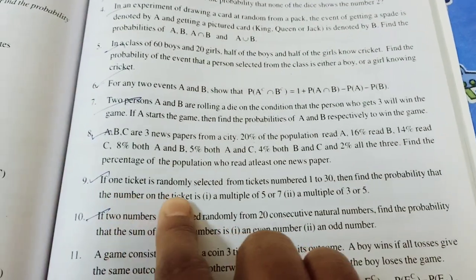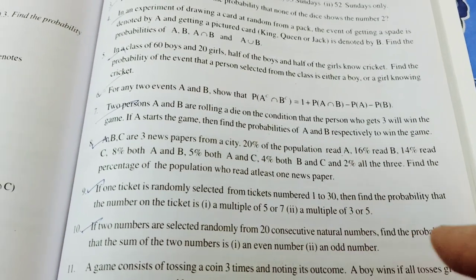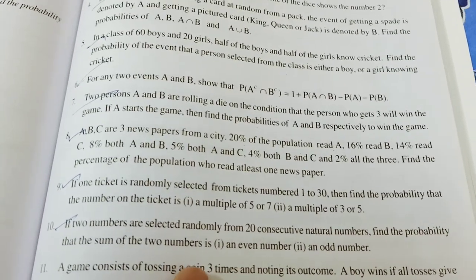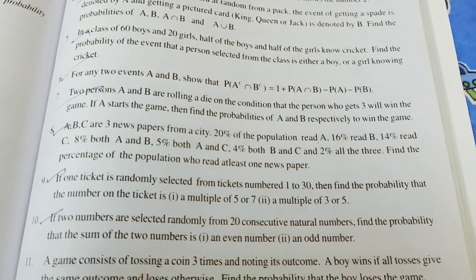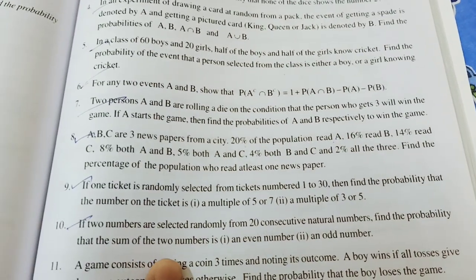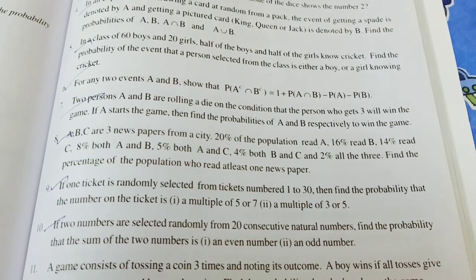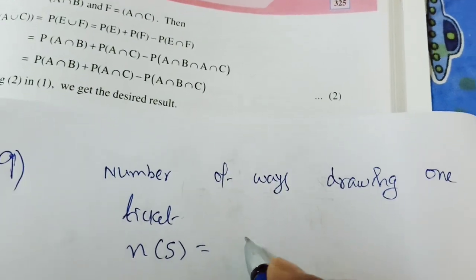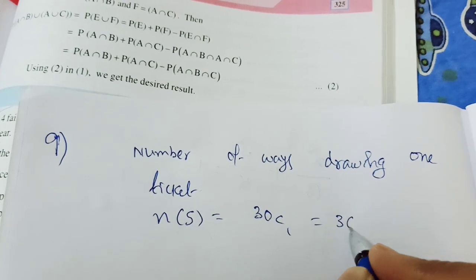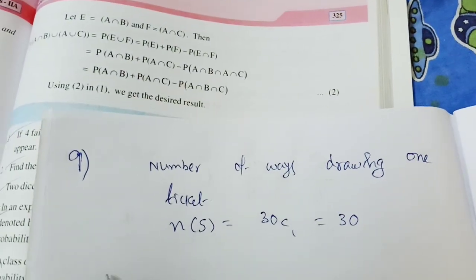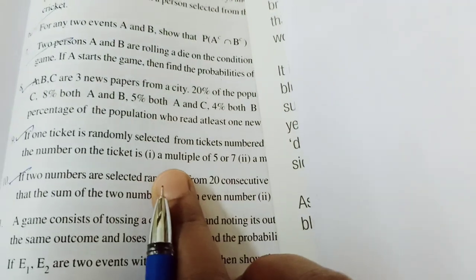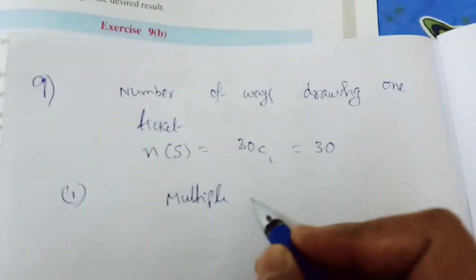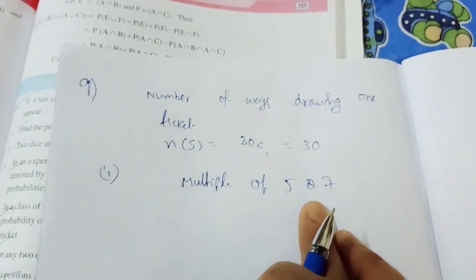Now see: one ticket is randomly selected out of tickets numbered 1 to 30. Find the probability that the number on the ticket is — first option: a multiple of 5 or 7; second option: a multiple of 3 or 5. The first option is multiple of 5 or 7.